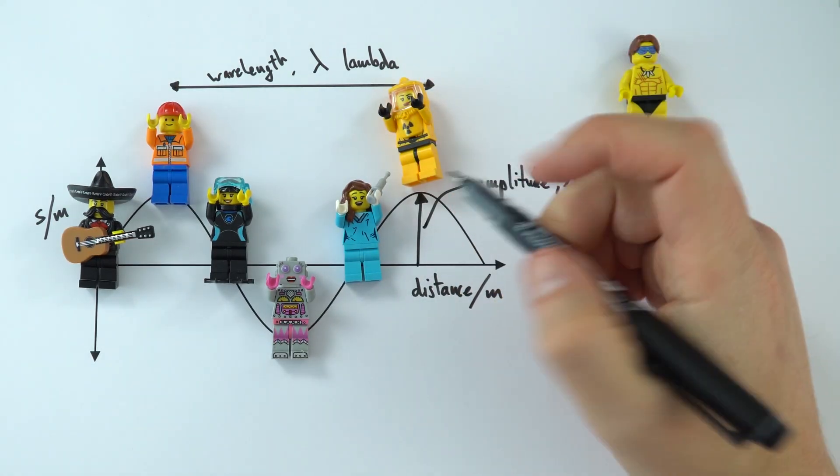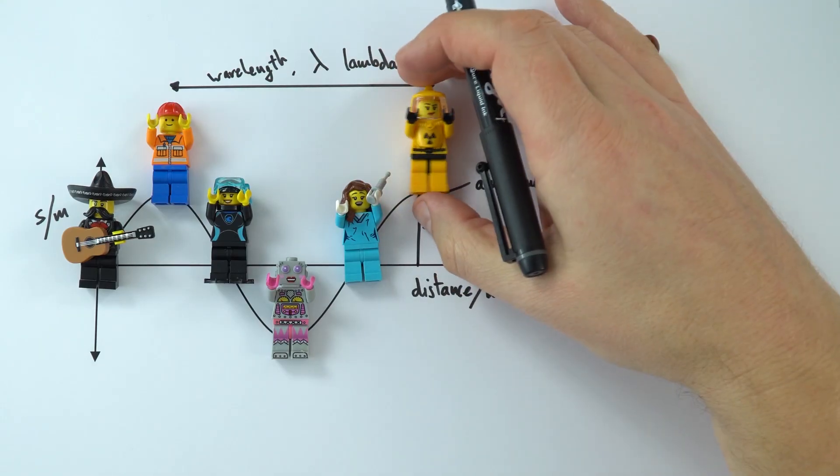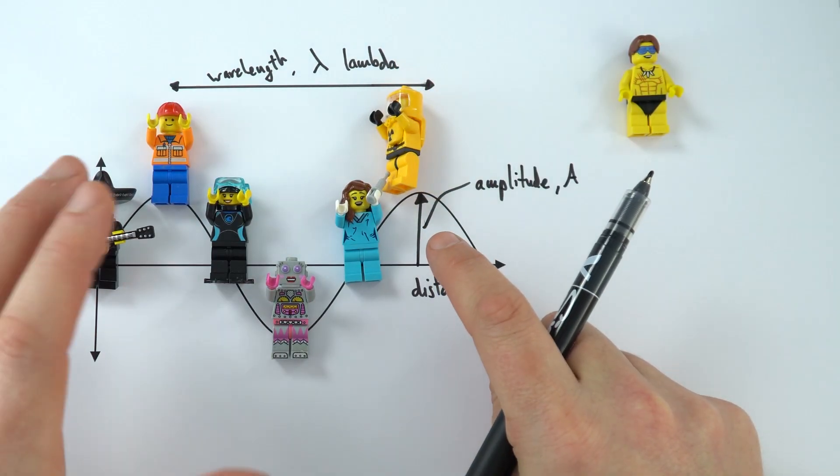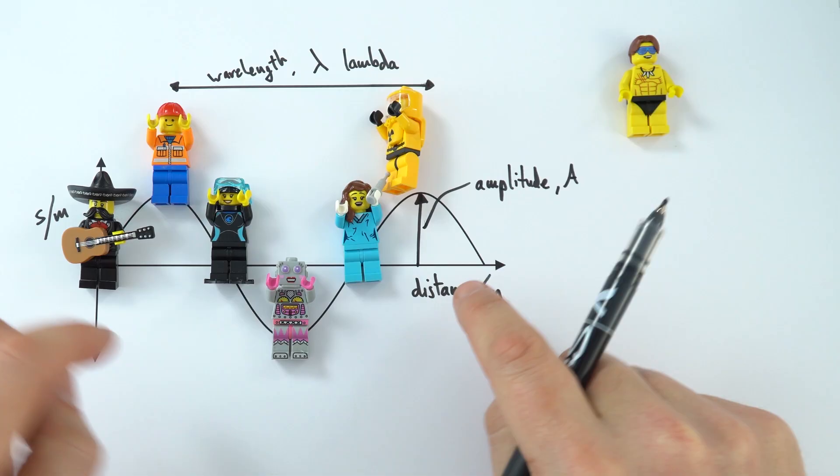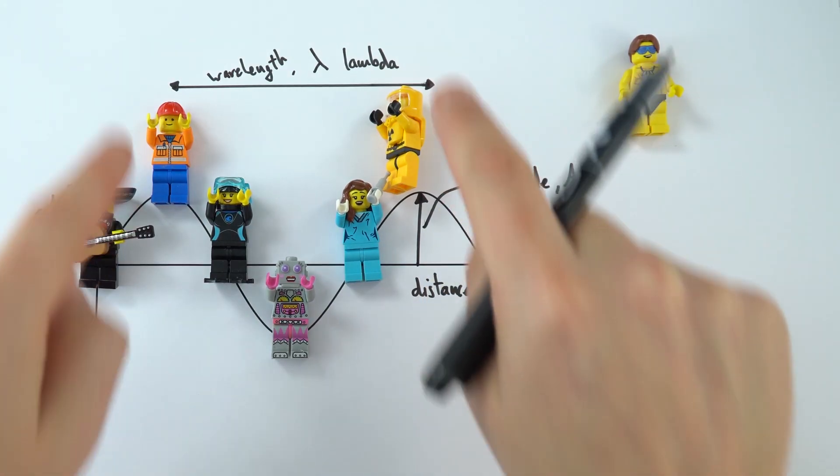And for these mechanical waves, we can just measure that in metres. So these two things are things that you need to be able to identify from a graph of a wave. We've got the amplitude of the wave and the wavelength.